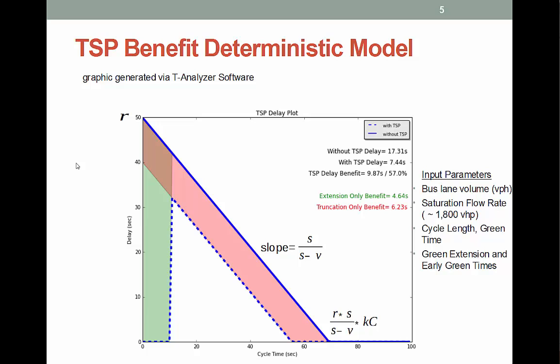Here is an example of a deterministic tool for TSP — this is actually an output of the transit analyzer model. Let's start with the green region to the left. This region shows the green extension benefit region. If the bus were to arrive at the intersection right at the beginning of red, it would experience delay equal to R, the red time — in this case 50 seconds. The delay would be less and less if the bus would arrive later than that. At some point the light turns green, the queue starts discharging, and once the queue clears, the delay would be zero as the bus arrives during green without any queues blocking it.